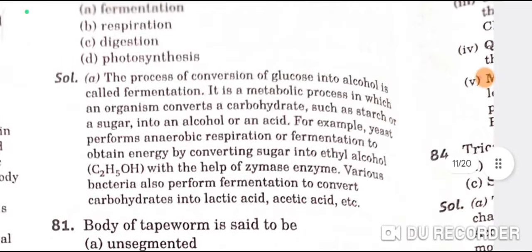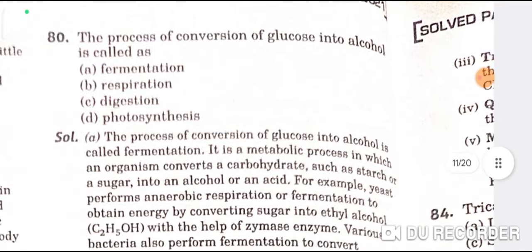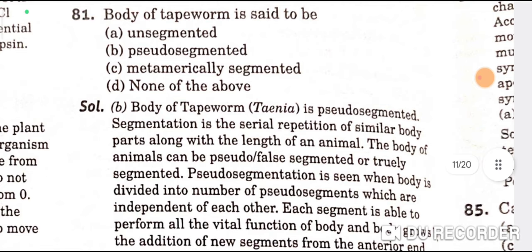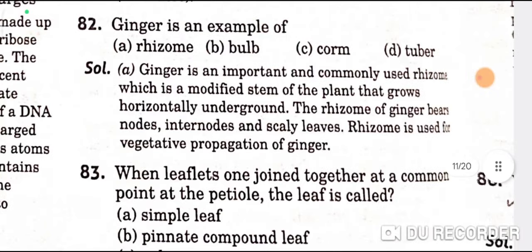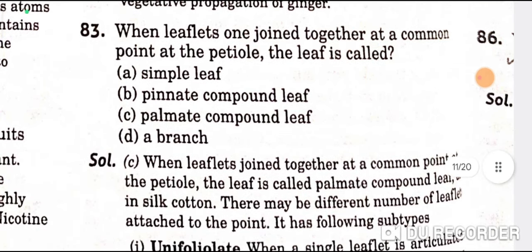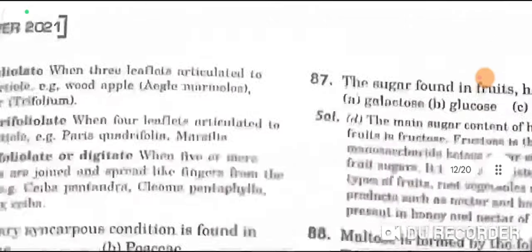The process of conversion of glucose into alcohol is called fermentation — A is the correct option. The body of a tapeworm is said to be pseudo-segmented — B is the correct option. Ginger is an example of a rhizome — A is the correct option. When leaflets join together at a common point at the petiole, the leaf is called a palmate compound leaf — C is the correct option.